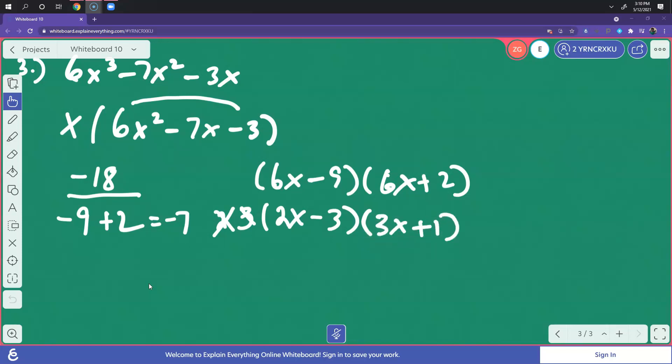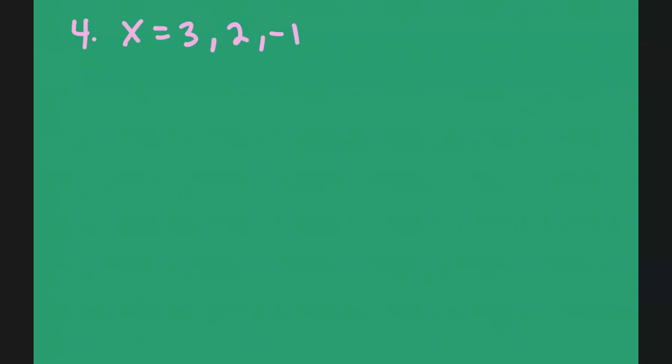So what is it in factored form? x times (2x minus 3) times (3x plus 1). And now write the polynomial function in standard form with the given zeros.